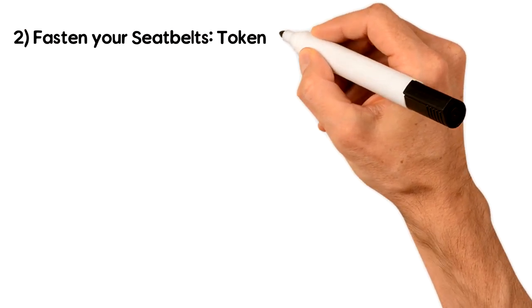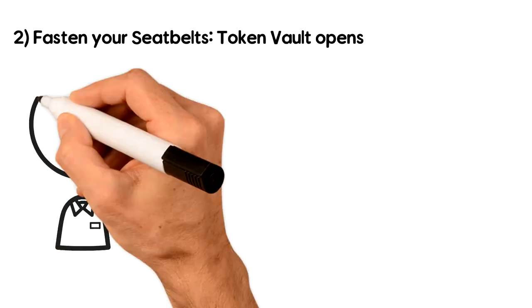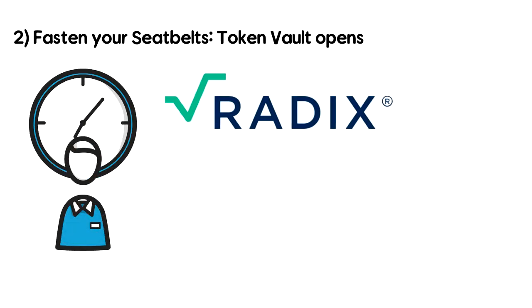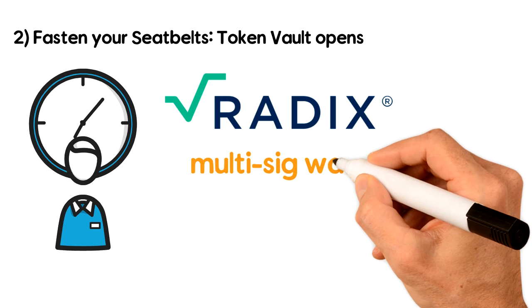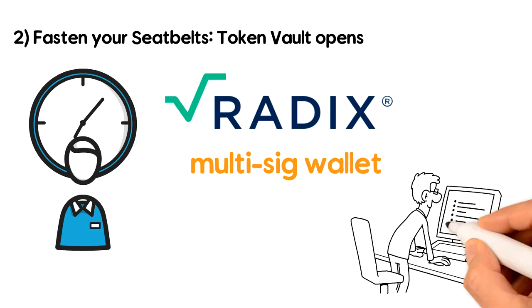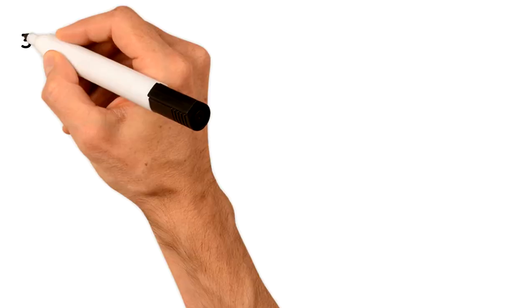2. Fasten your seatbelts, Token Vault opens. Within 24 hours of the price level being hit, tokens are moved from the Radix Token Vault using a multi-sig wallet. Two of three custodians need to sign the transaction.